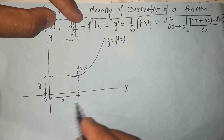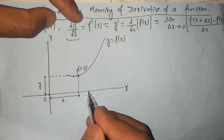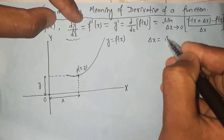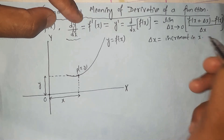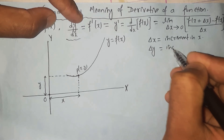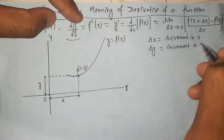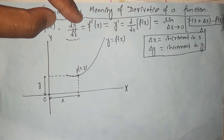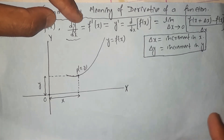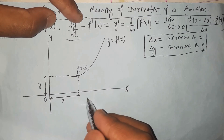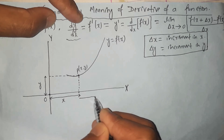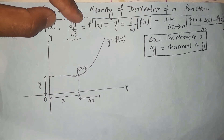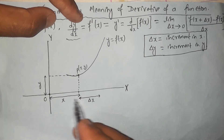Now let's do some increment. Let's shift this point some distance — let's do an increment by delta x. Delta x means a small increment in the variable x. Similarly, delta y is an increment in the variable y. Remember the meaning of these two notations: delta x and delta y are the small increments in the variables x and y respectively. Let's increment x by some value delta x — let's say this increment distance is just delta x.